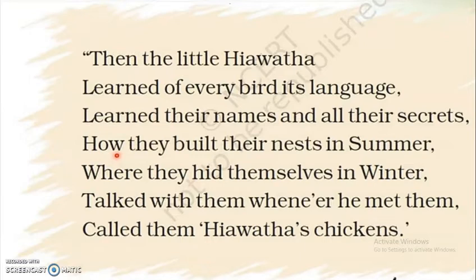Let's understand the first stanza of this poem. 'Then the little Hiawatha learned of every bird its language' - so he learned very well the language of every bird. 'Learned their names and all their secrets' - he knew the names of every bird and their secrets. 'How they built their nest in summer' - how the birds built their nests in summer.